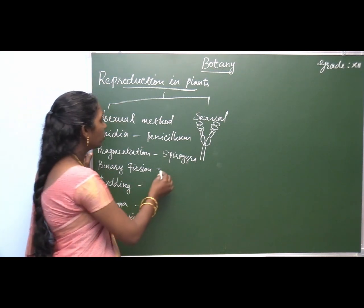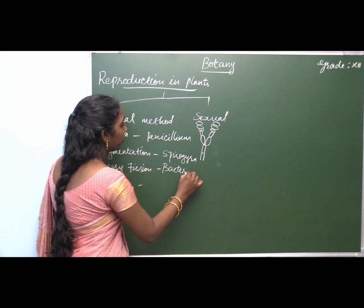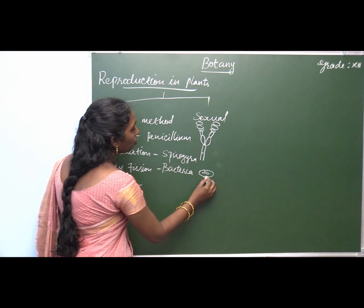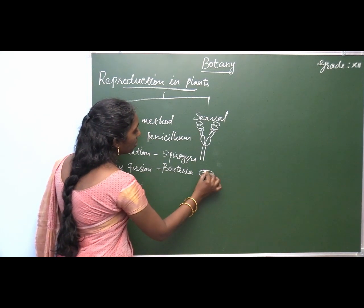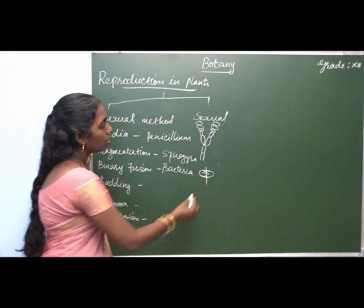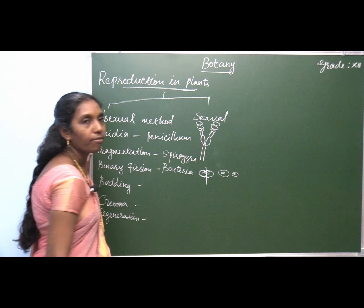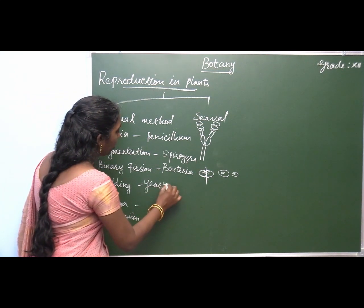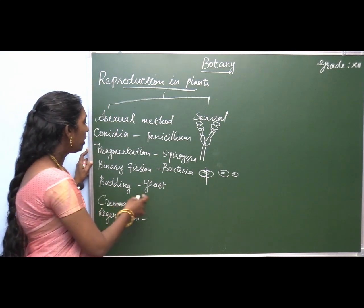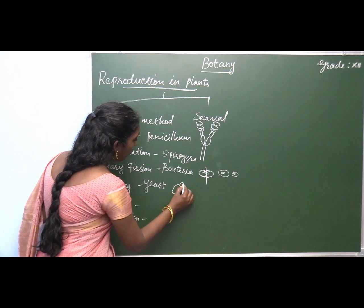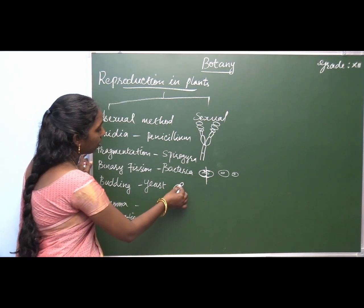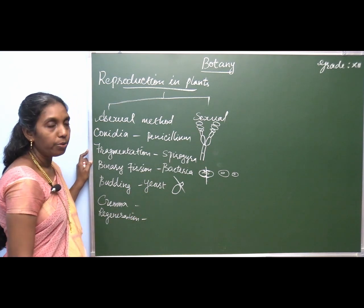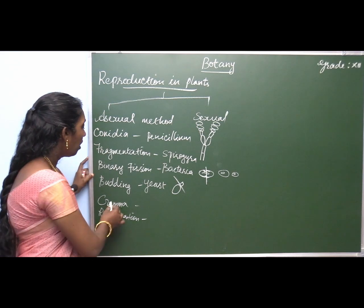Binary fission is observed in bacteria — a single cell which has the ability to divide and form two new species. Then budding in yeast and hydra: budding is a method of asexual reproduction where buds are developed, and this bud detaches from the parental one and develops into a new plant body or new species.